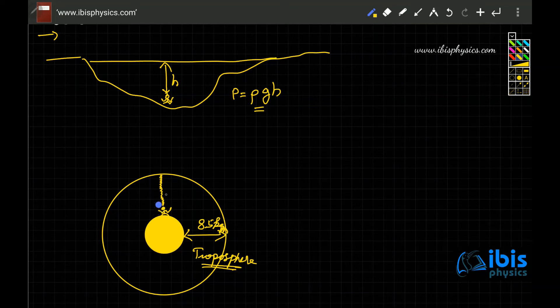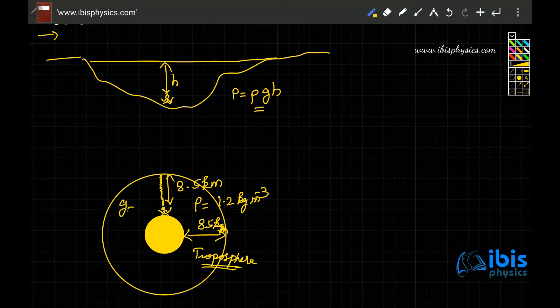So the air column's height above us is 8.5 kilometers approximately. Then the density of the air is roughly - the density of the air surrounding us is roughly 1.2 kilogram per meter cube. The value of gravity is approximately 10 meter per second square.